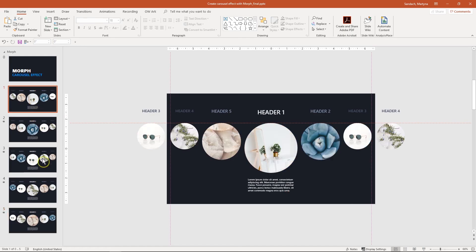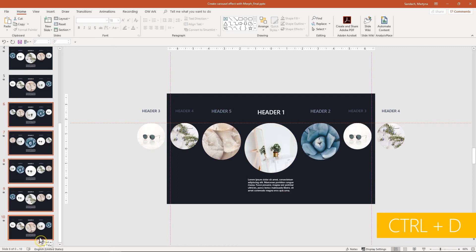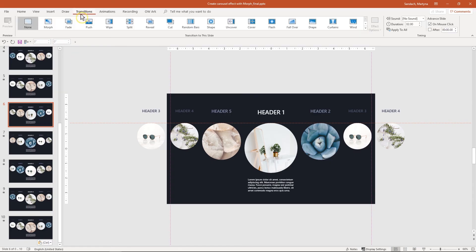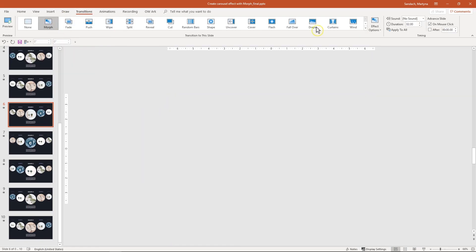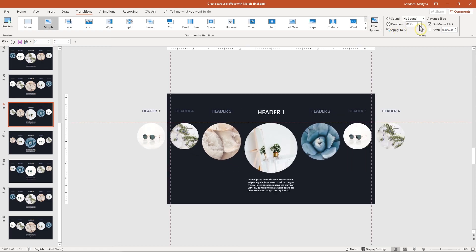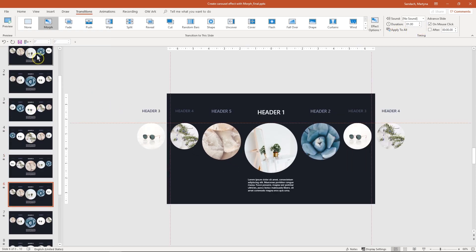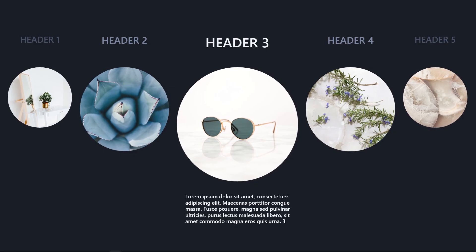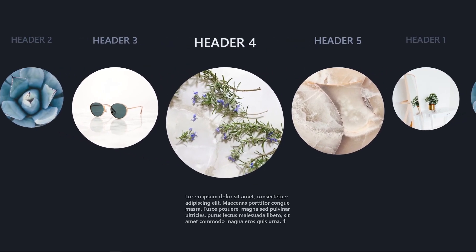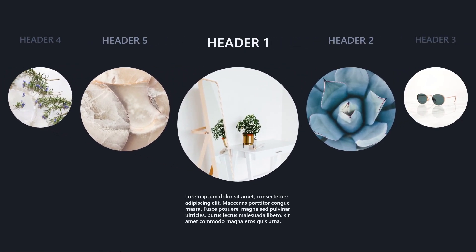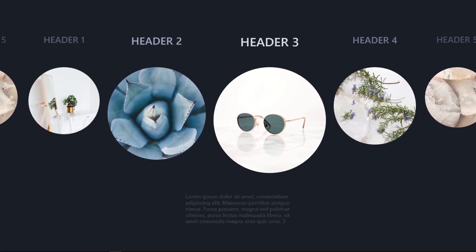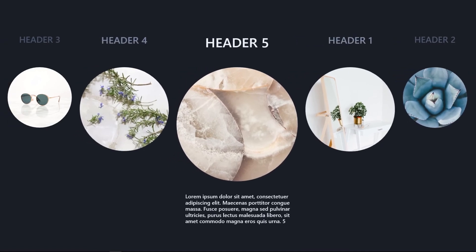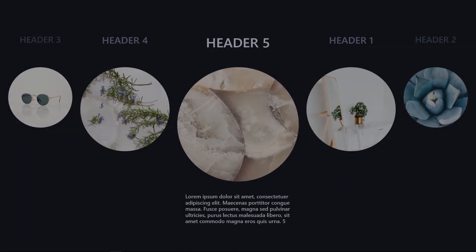If you would like a longer animation to go through all the chapters again, select all five slides that we've created and duplicate them, or simply copy-paste. The last adjustment would be to apply the Morph transition to the sixth slide, because previously that was our first slide and we didn't apply the transition to it. Adjust the duration to one second, then do one more test to see if that transition works well — start the slideshow and go through all the circles. You can also go back and forth. Our sequence is now much longer, so we have more flexibility.